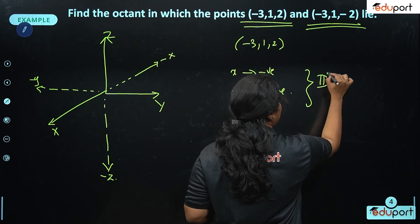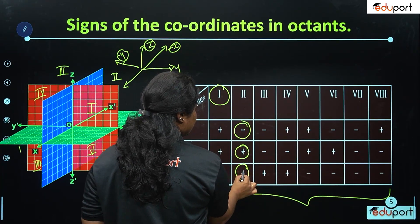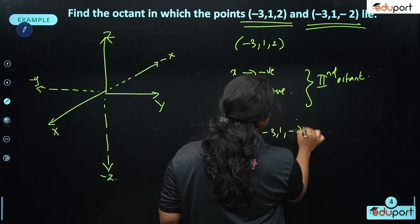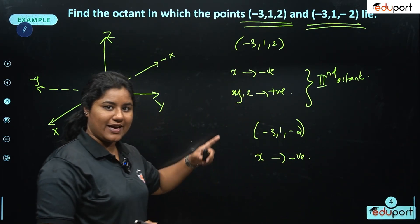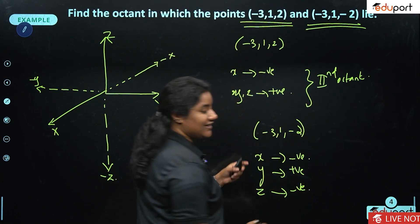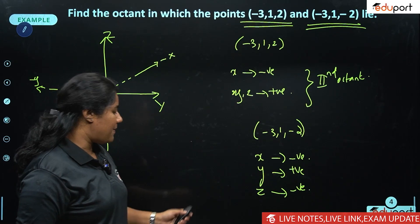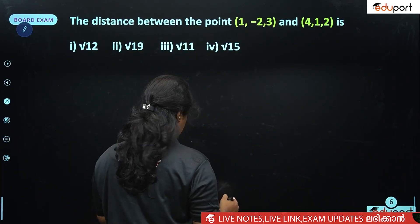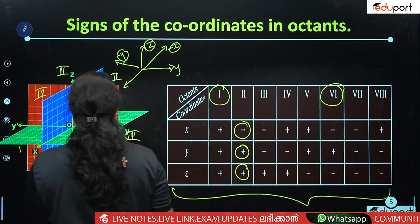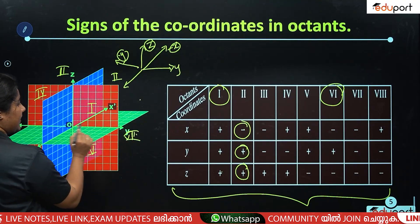For the second point (-3, 1, -2): x is negative, y is positive, z is negative. Looking at the table, this gives us minus, plus, minus — that is the sixth octant. So this point lies in the sixth octant.